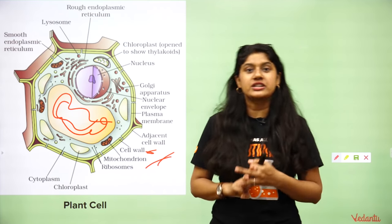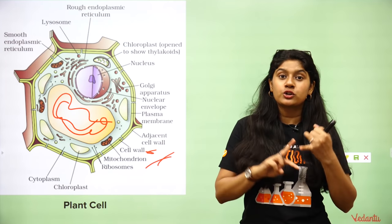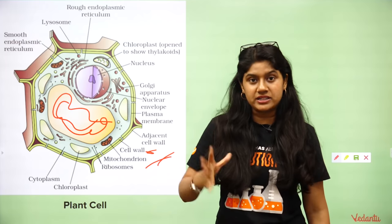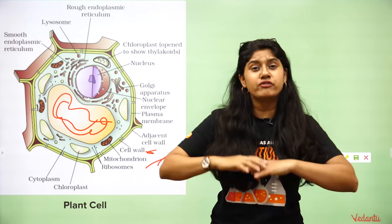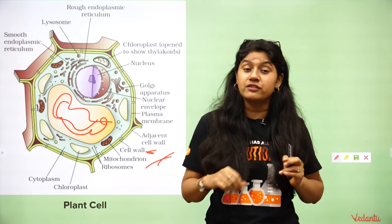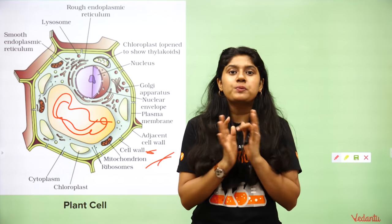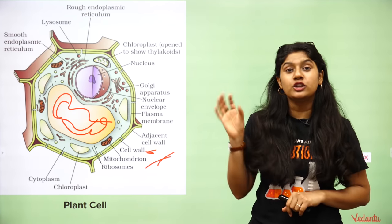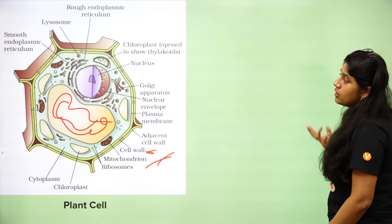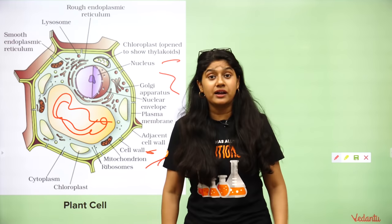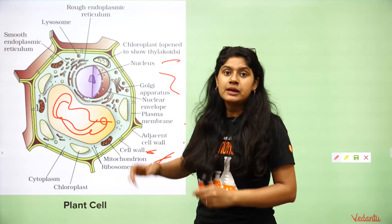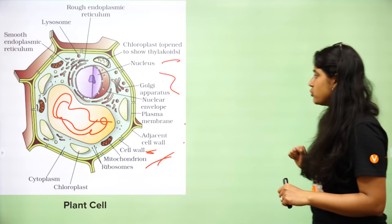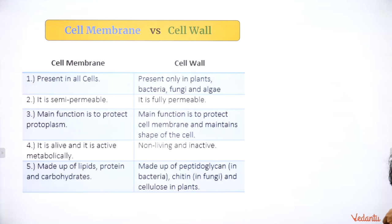Plastids are of three different types: chloroplasts are green, chromoplasts are red, brown, or bright orange, and leucoplasts are plain white with no pigment. Some of these perform photosynthesis. Leucoplasts store starch and oil. Plant cells have a large vacuole whereas animal cells have small vacuoles that are very few in number.